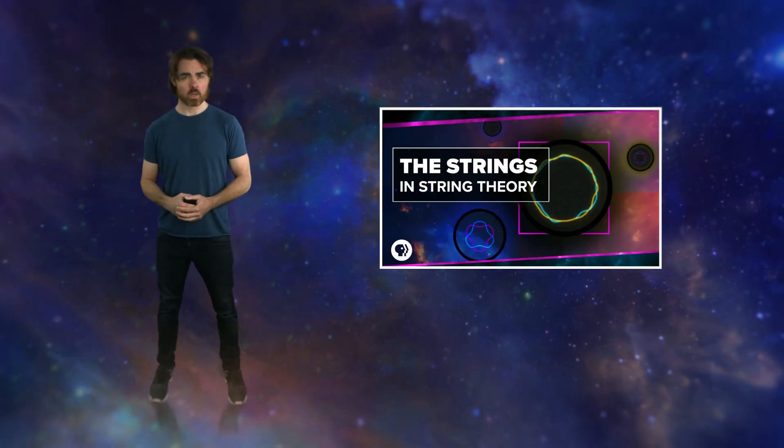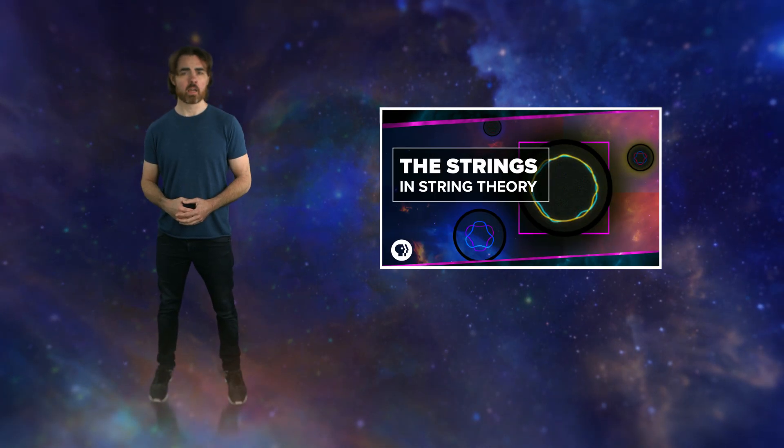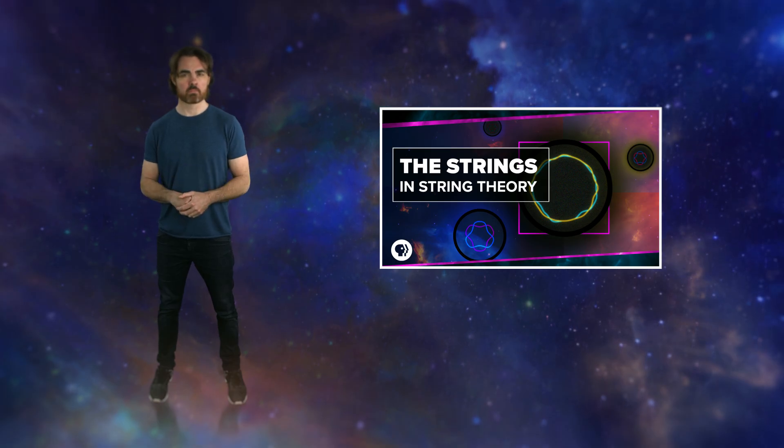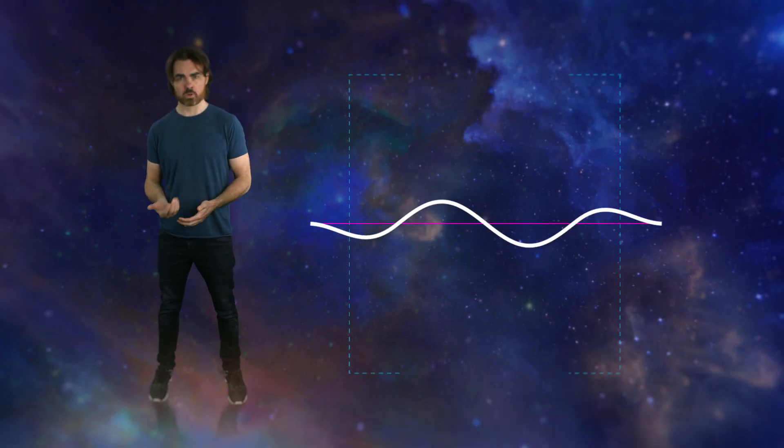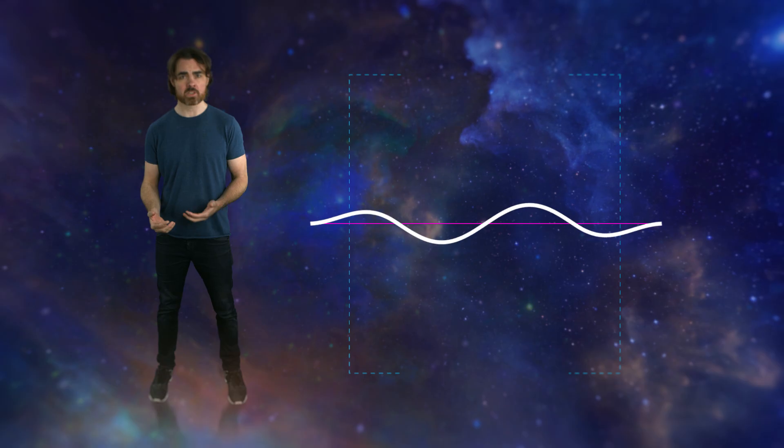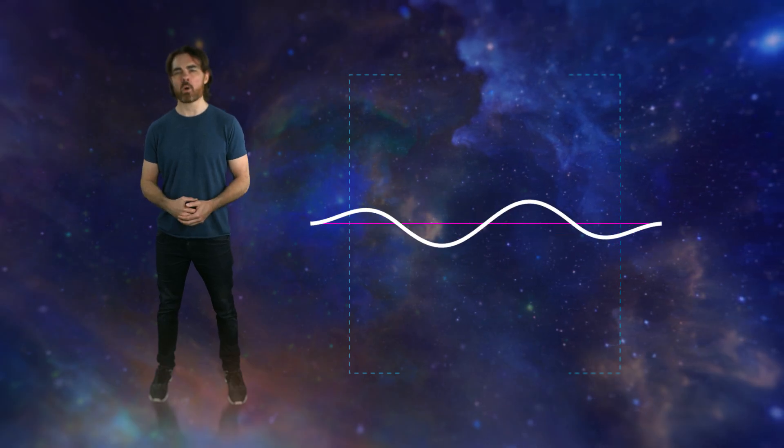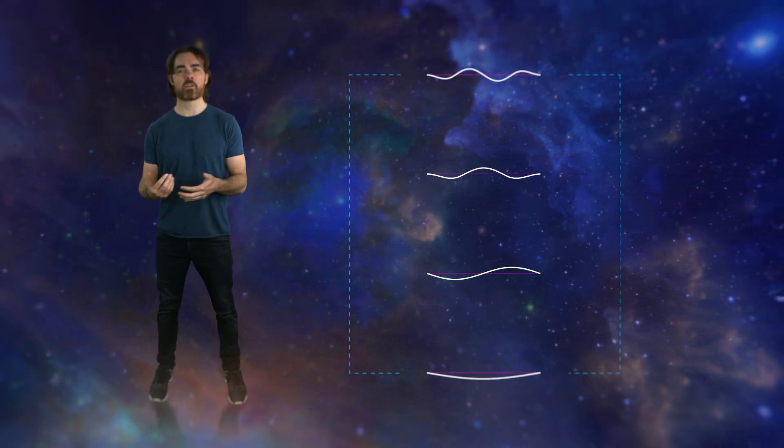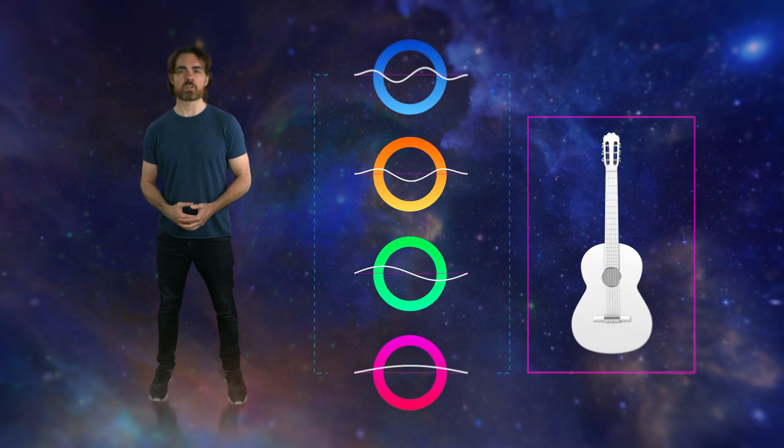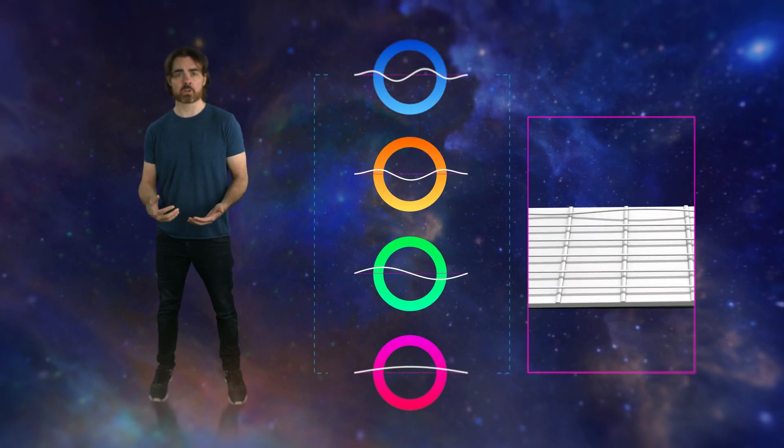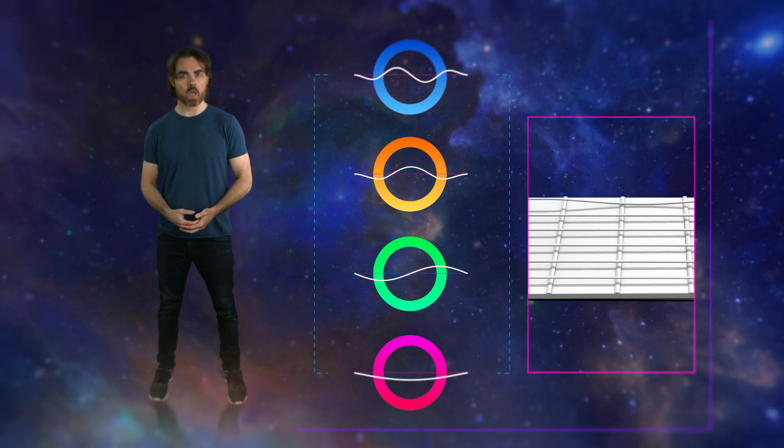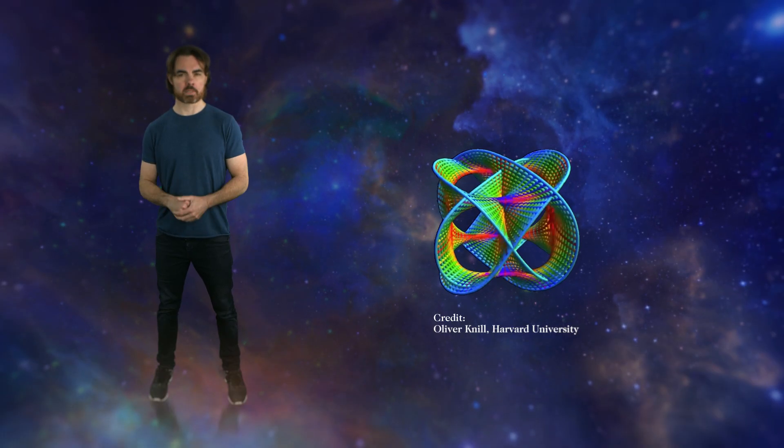In our last string theory episode, I talked about what these things really are and covered some history. In short, the strings of string theory are literal strands and loops that vibrate with standing waves. Simply by changing the vibrational mode, you get different particles, analogous to how different vibrational modes on guitar strings give different notes. And by the way, these strings exist in six compact spatial dimensions on top of the familiar three.